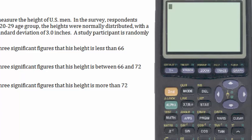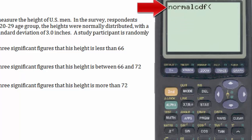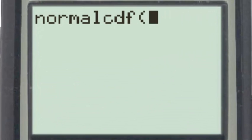The second method of doing this problem requires going to the distribution button, second, distribution, selecting the number 2, the normal cumulative density function, and now inputting the z-score for 72, which is 0.8, with a comma, and then the double e, engineering exponent, 99, which is the TI-83 understanding of infinity.